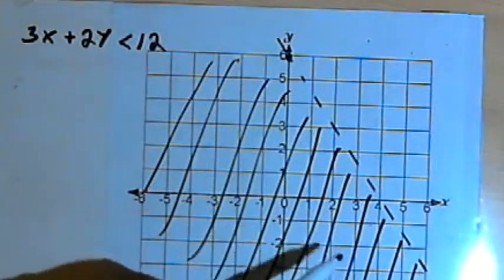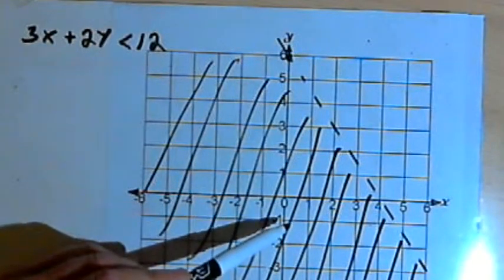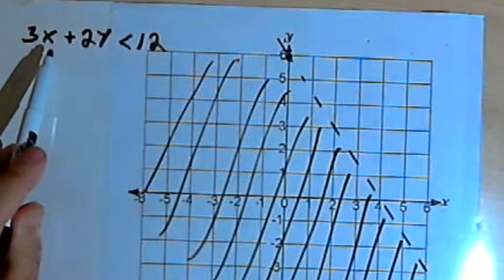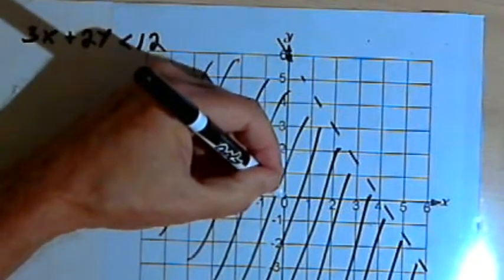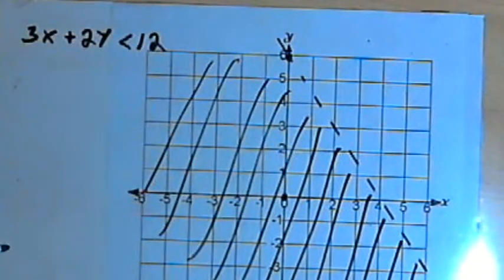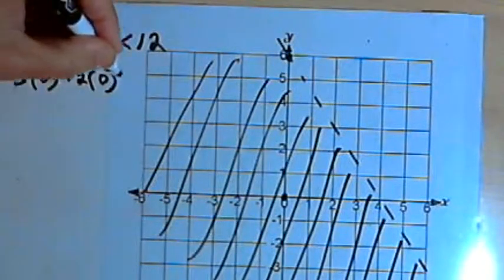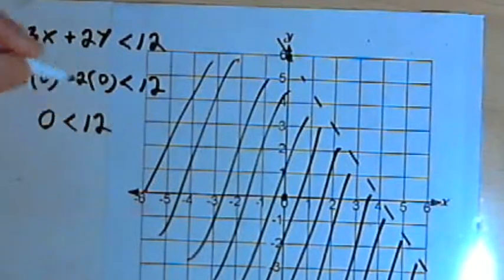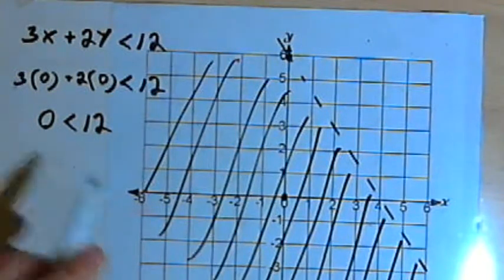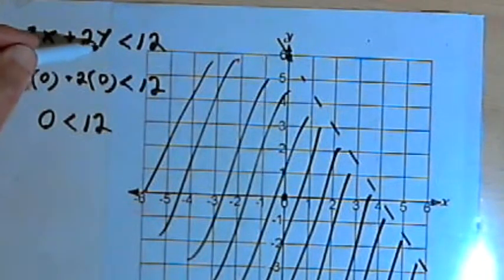And now what this means is that if I pick any point in that shaded area, the coordinates for that point, the x and y coordinates, will satisfy this inequality. They'll make that inequality true. So let's pick a really easy point. Let's pick the origin. At the origin, the coordinates are 0 and 0. So x is 0. That means we've got 3 times 0 plus 2 times 0 is less than 12. That's just like saying 0 is less than 12, which is true. Which means any point in this shaded area will make this inequality a true inequality.